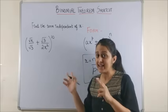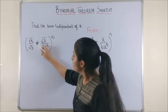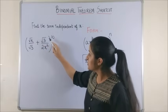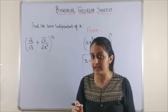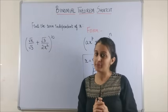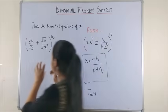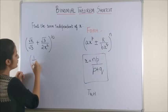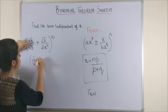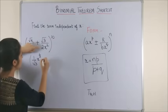Now, look at another question. It says root x upon root 3 plus root 3 upon 2x square whole raised to power 10. And you have to find the term independent of x. Let's simplify this a bit first. You can do that mentally.